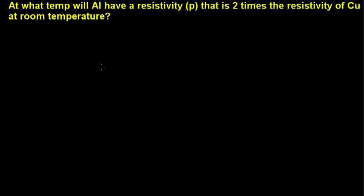Hi. Today we're talking about resistance and resistivity. In this problem it asks: at what temperature will aluminum have a resistivity that is two times the resistivity of copper at room temperature? We're going to look at our equations, and what we need to work with is a term called alpha, or the temperature coefficient of resistivity.